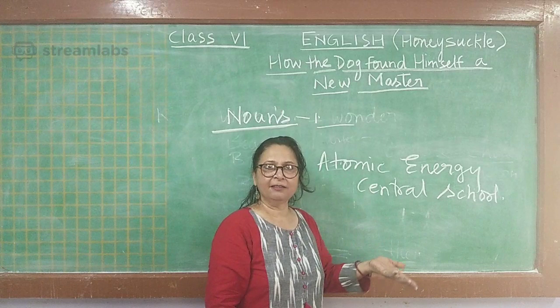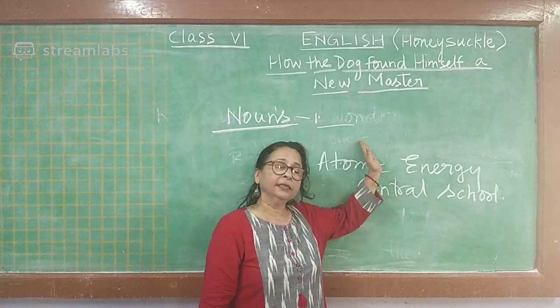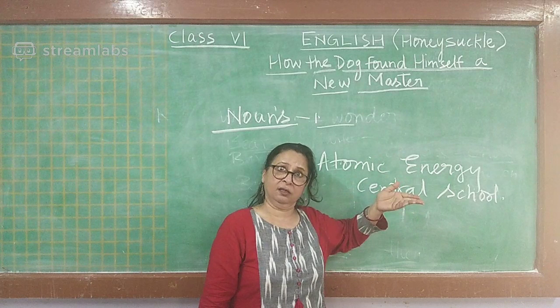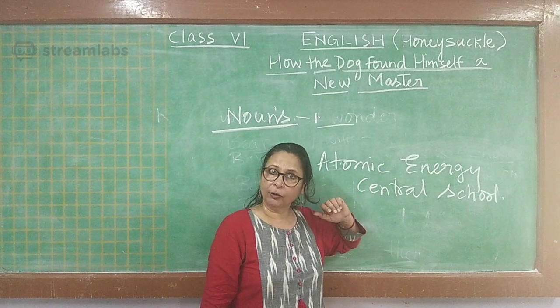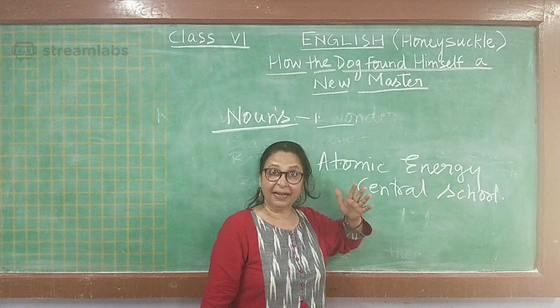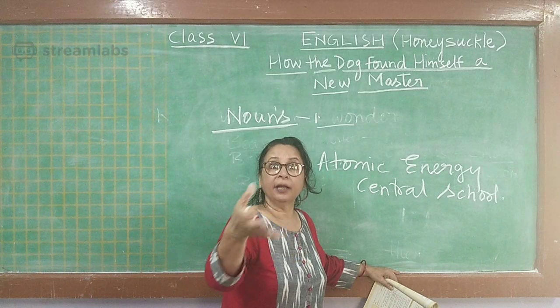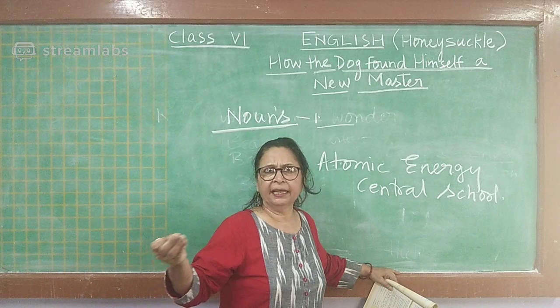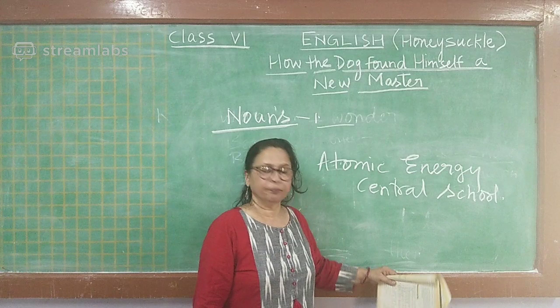Common noun is easy. Then compound noun. Then countable and uncountable nouns. Countable nouns are those we can count — the common nouns we discussed. Uncountable nouns are those we cannot count, like water, air, wood, gold, silver, milk. These are also called material nouns in older grammar, but now they fall under uncountable nouns.